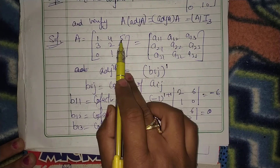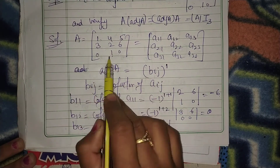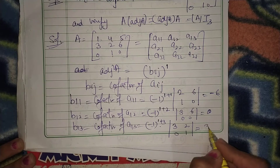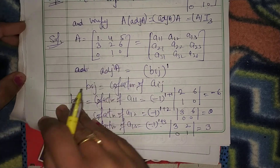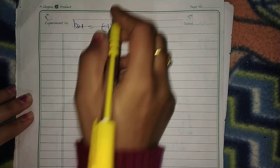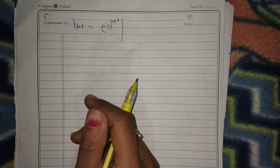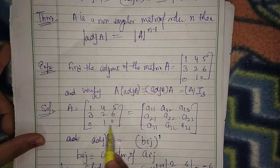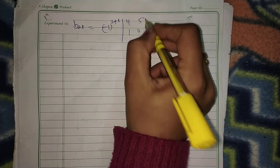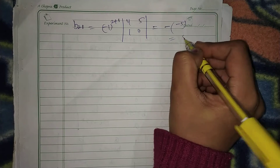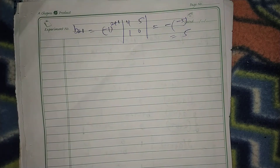What is B13? It is (-1)^(1+3) times the cofactor of A13. Deleting row 1 and column 3, we get [[3,2],[0,1]], so det = 3. Thus B13 = 3. What is B21? That is (-1)^(2+1) times the cofactor of A21. Deleting row 2 and column 1, we get [[4,5],[1,0]], det = 0-5 = -5, so B21 = (-1)(-5) = 5. Same way you can find all other cofactors.